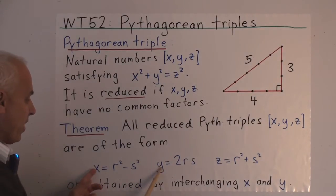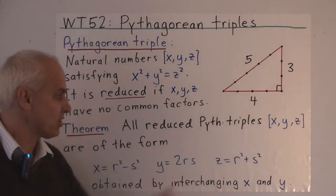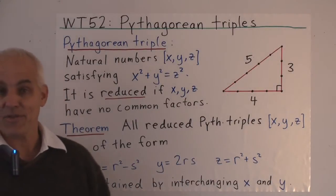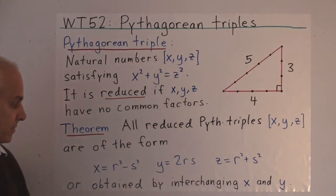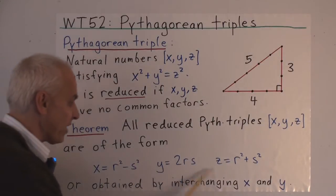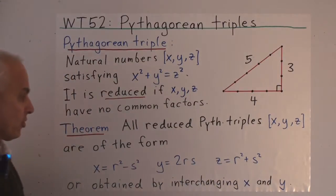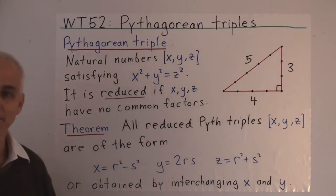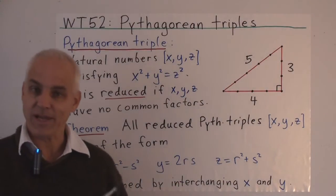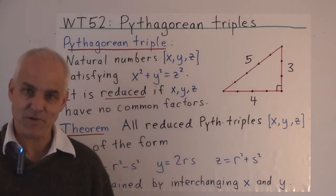And x and y can be interchanged, and otherwise all reduced Pythagorean triples are obtained this way. So we see the three quadratic forms corresponding to blue, red, and green geometries playing a natural role in this understanding of Pythagorean triples.